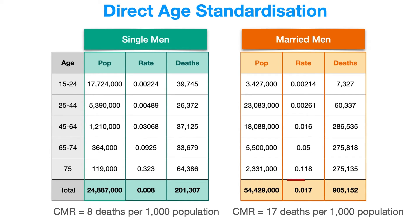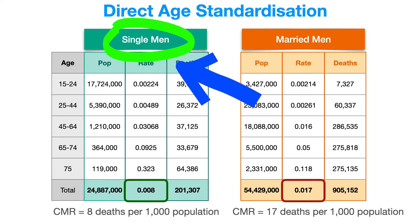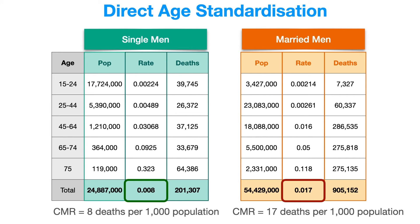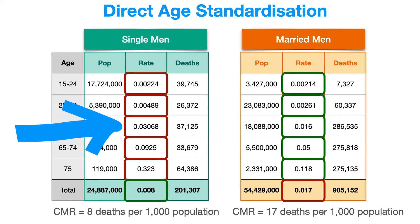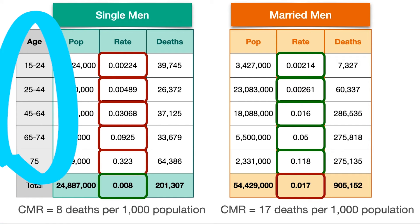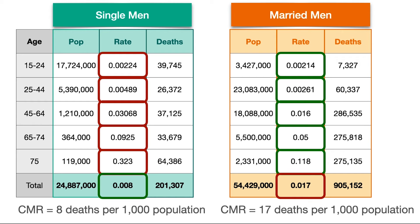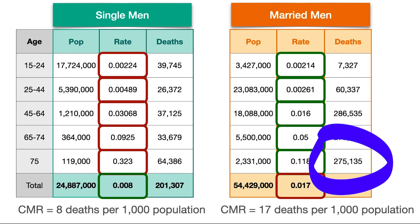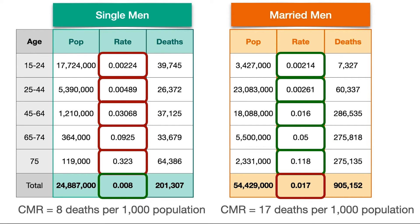In these two groups, the crude mortality rate in married men is 0.017, or 17 deaths per thousand population — about double the crude mortality rate of single men, which is at eight deaths per thousand population. So before adjusting for age, it looks as if single men are much healthier than married men. But in every single age band, single men actually have a higher mortality rate than married men. The reason for the overall lower crude mortality rate is that the age structure of single men is very different from married men — there are a lot of young single men where the mortality rate is low, and many married men who are older where the mortality rate is higher. Age structure is a confounding factor.